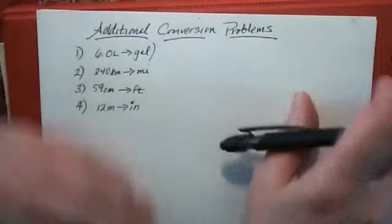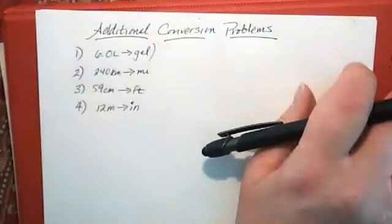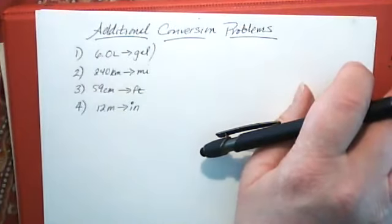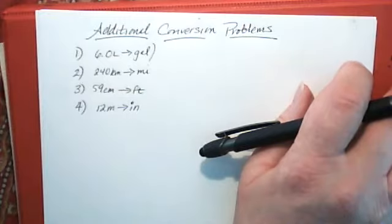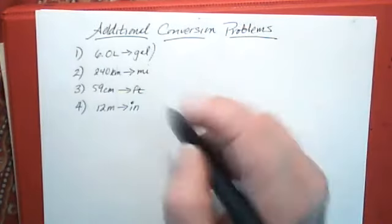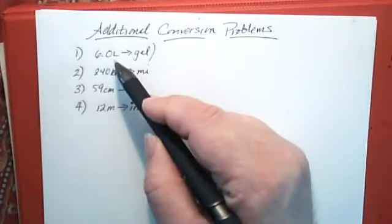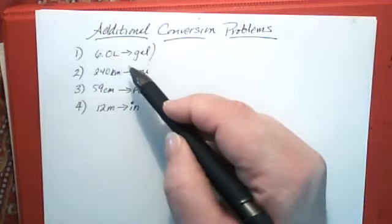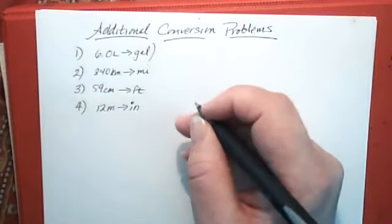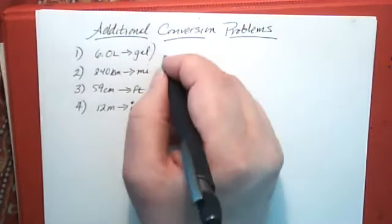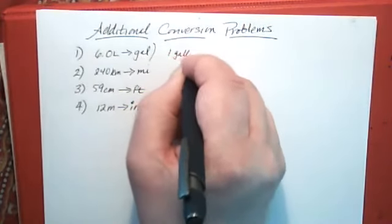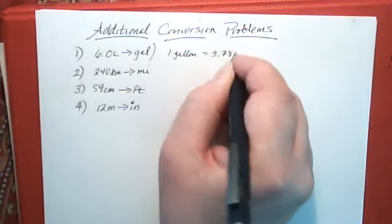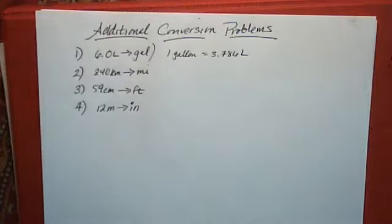For number one, 6 liters to gallons: liters and gallons are both units of volume. Going down the list under volume, there's first a conversion between liters and quarts — you could use that and then go from quarts to gallons, knowing four quarts in a gallon. But going further down the list: one gallon is equal to 3.786 liters. That's even better — we can do it in one step.